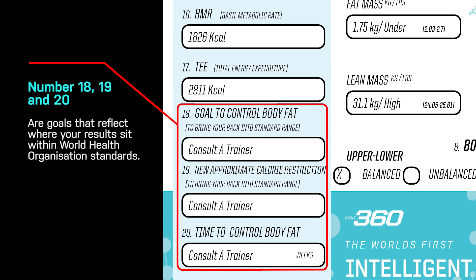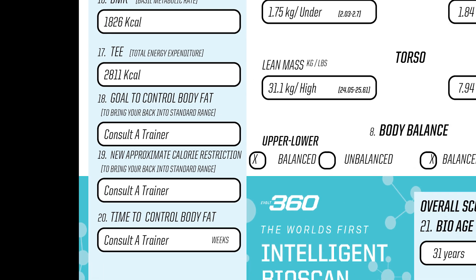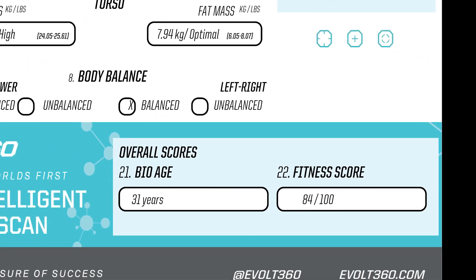Numbers 18, 19, and 20 are goals that reflect where your results sit with World Health Organization standards. These measures should be ascertained with the assistance of the eVOLT Active app, using the My Macros feature, as well as with the assistance of your trainer or healthcare medical professional, such as a dietitian or nutritionist.